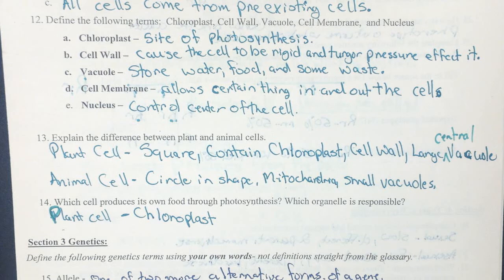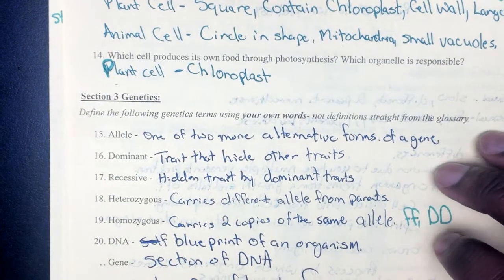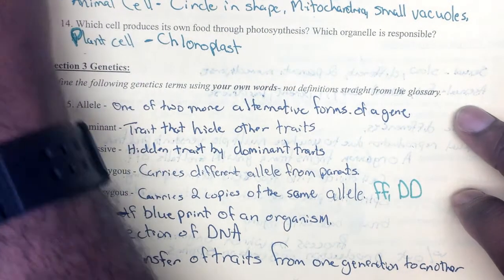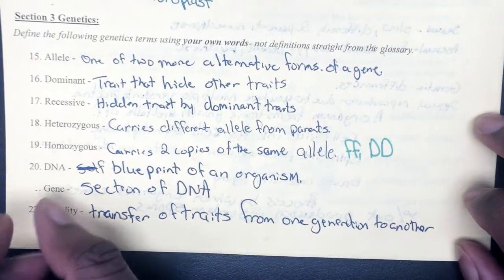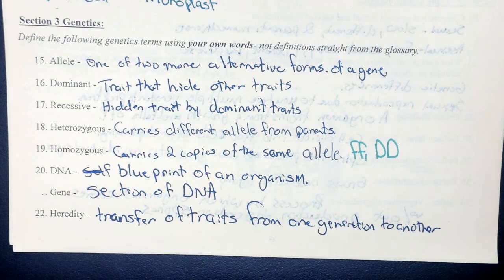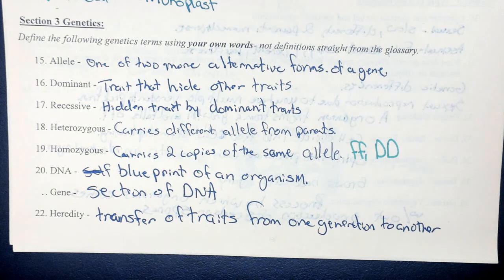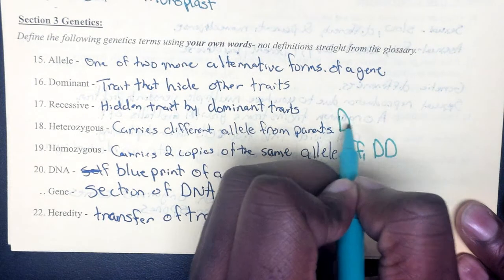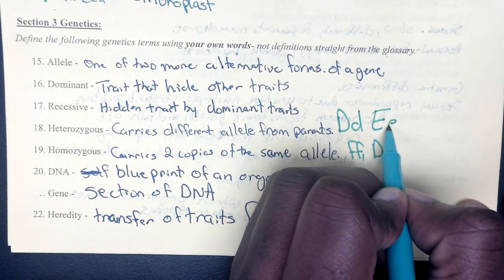Section 3 is about genetics. You must know the definitions and be able to identify these terms. An allele is one of two or more alternative forms of a gene — such as X or Y, blue or brown eyes, or straight or curly hair. A dominant trait is a trait that hides other traits. Recessive is the hidden trait, masked by the dominant. Heterozygous carries different alleles from each parent — for example, big D, little d — because hetero means different.